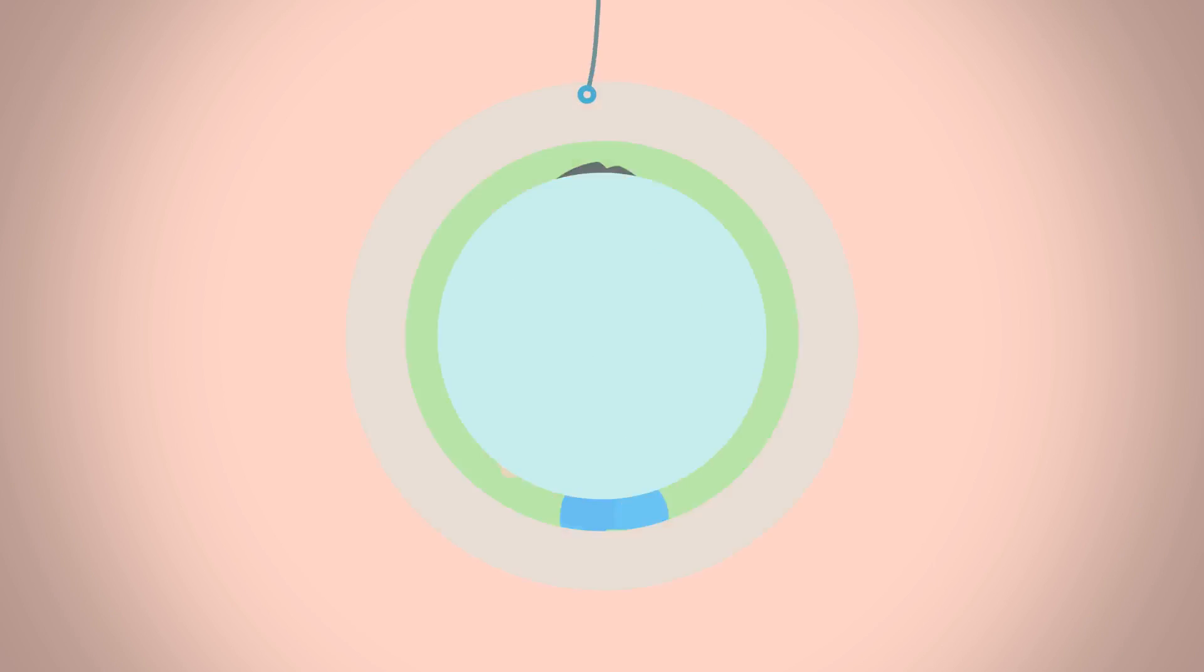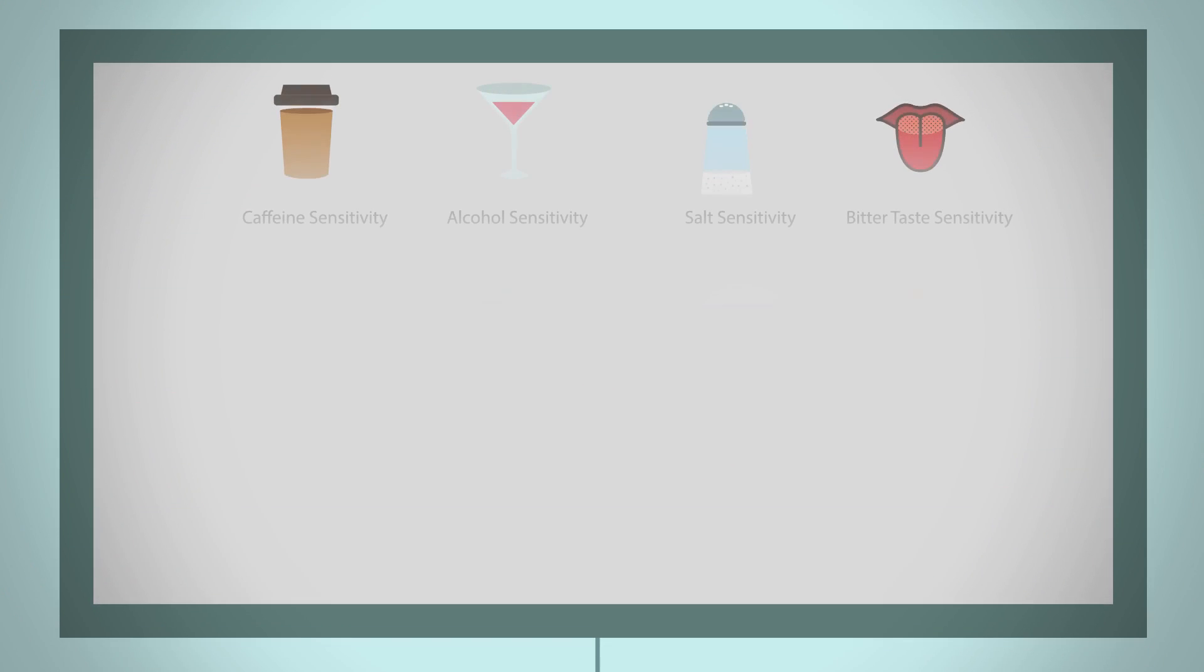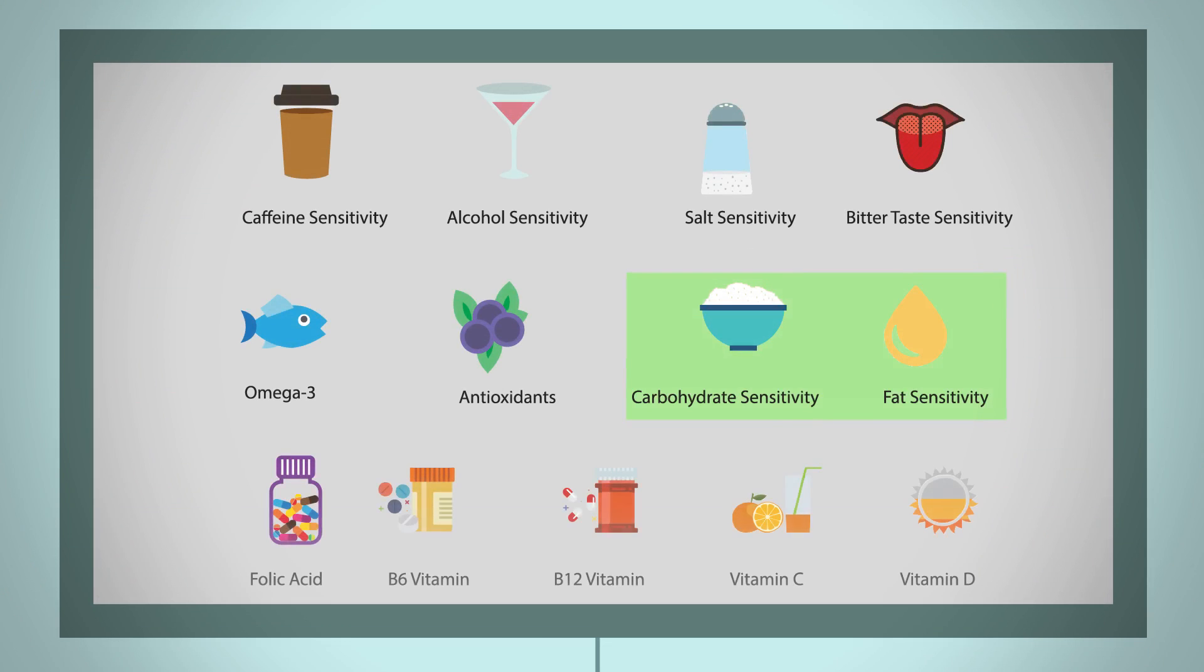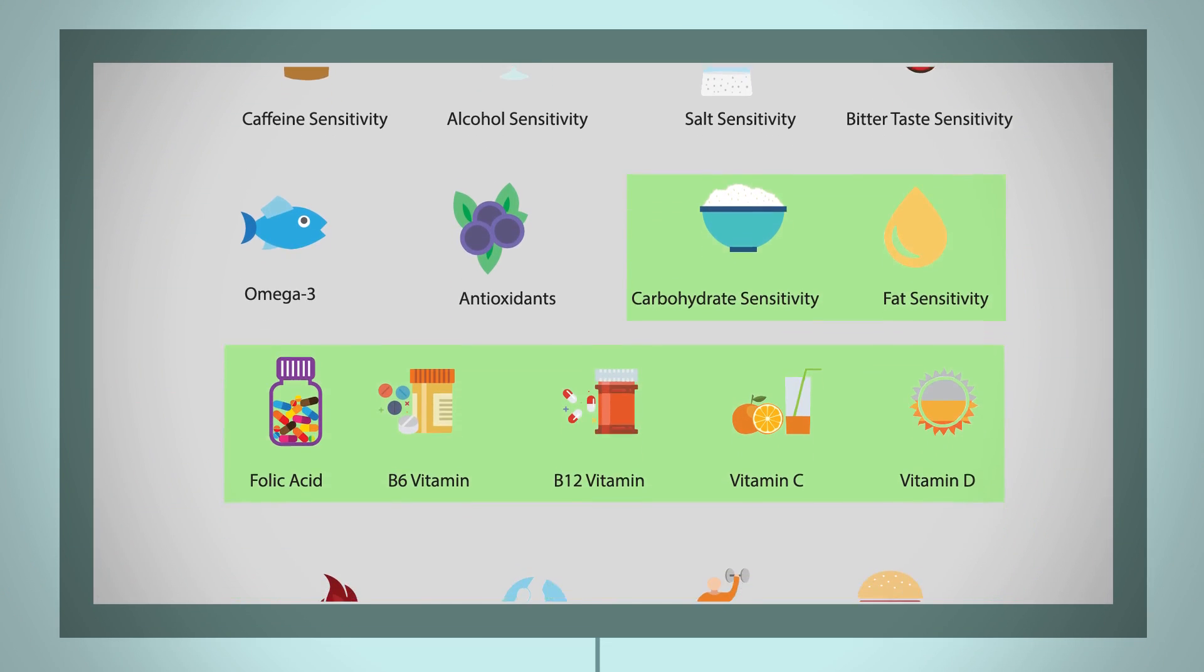we analyze your DNA and provide you with over 20 diet and fitness categories related to how your genes affect your metabolism, processed carbohydrates, fats, vitamins and more.